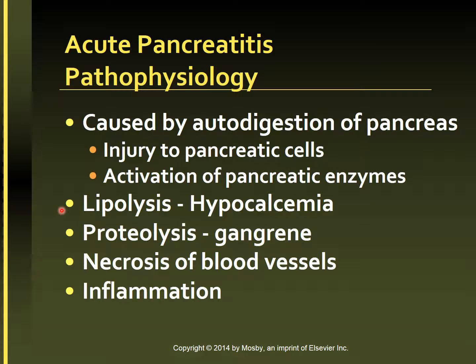The enzyme lipase causes enzymatic fat necrosis of the endocrine and exocrine cells of the pancreas. Fatty acids released during this lipolytic process combine with ionized calcium to form a soap-like product. The initial rapid lowering of serum calcium is not readily compensated by the parathyroid gland, and because the body needs ionized calcium, hypocalcemia occurs. Inactive trypsinogen, a proteolytic enzyme, gets activated to trypsin, and proteolytic activity may lead to thrombosis and gangrene of the pancreas.